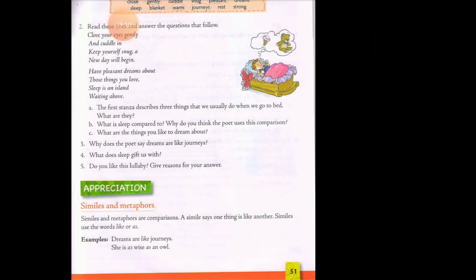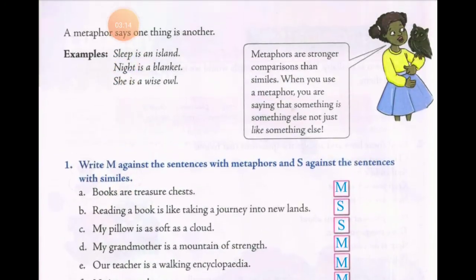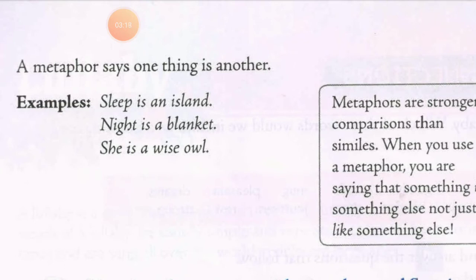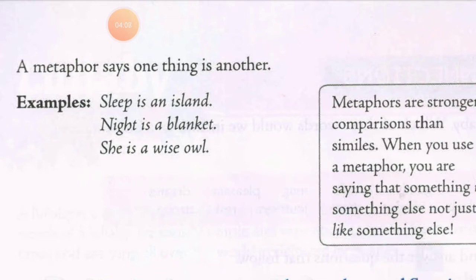Now moving to page number 52. A metaphor says one thing is another — not 'like' another, but is the other. For example: 'Sleep is an island.' In similes we said 'dreams are like journeys,' but here it says 'sleep is an island' — neend ek tapu hai. Metaphor mein zyada gehra comparison kiya jata hai simile se — it is comparatively stronger. Second example: 'Night is a blanket' — raat hi chadar hai.